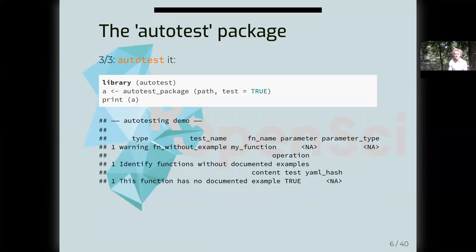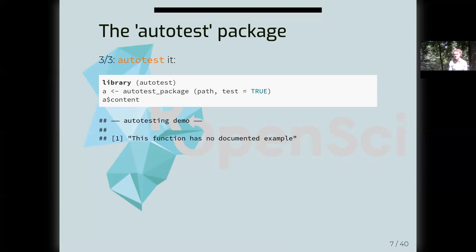The results don't look very nice on screen — the nine columns are a bit messy — but the one we're interested in is the content column. This content column tells you the content of the message that AutoTest issues in response to a test. In this case it says: this function has no documented example. As mentioned at the start, in order for AutoTest to work, each function needs to have examples — these are analyzed and extracted to identify all the parameters that are input into functions.